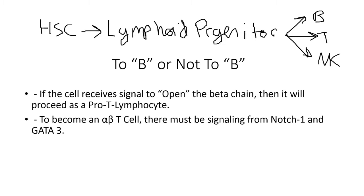Specifically, to become an alpha-beta T-cell, you have to have signaling from NOTCH1 and GATA3. So that brings up the question, what exactly is NOTCH?